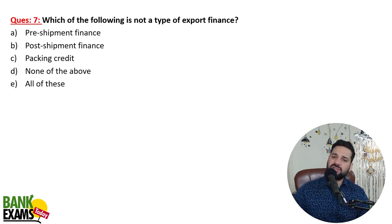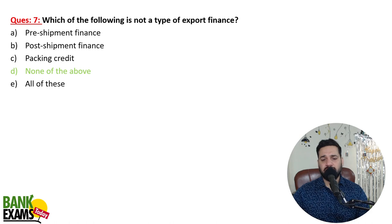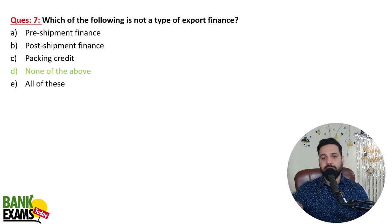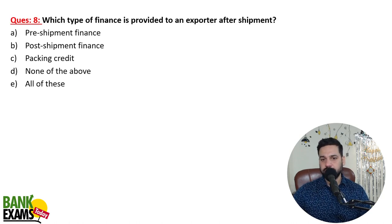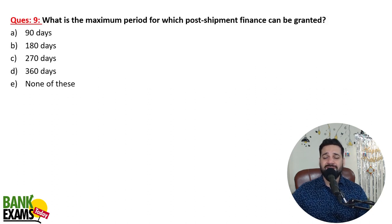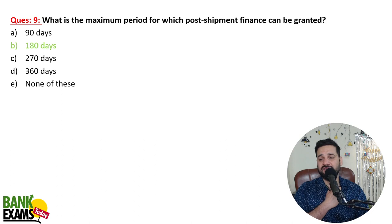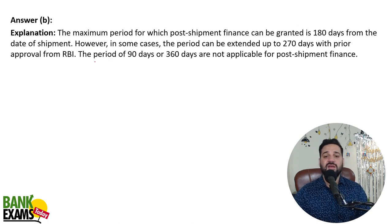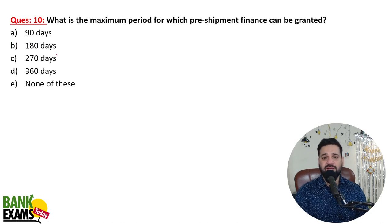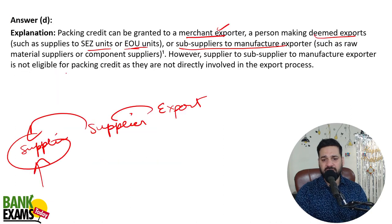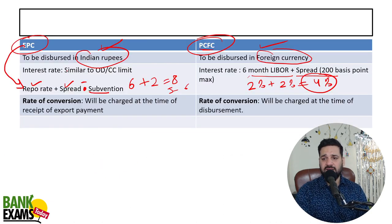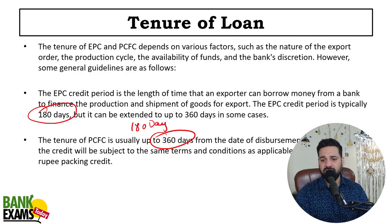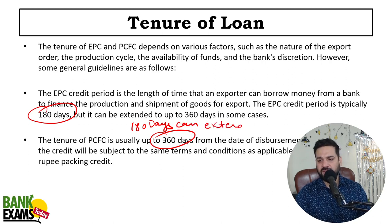Question: Which of the following is not a type of export finance? Pre-shipment, post-shipment, and packing credit are all types — so none of the above is the answer. Post-shipment finance is provided to an exporter after shipment. The maximum period for post-shipment credit is 180 days, which can be extended up to 360 days. Similarly, for pre-shipment credit it is also 180 days, extendable up to 360 days.